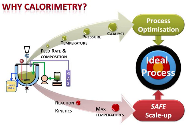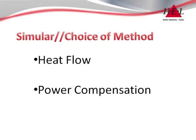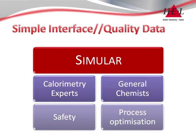The Simula delivers safe scale-up and process optimization in a single easy-to-use platform. It is offered as standard with two experimental methods: traditional heat flow and HL's proprietary power compensation. All methods are presented through a simplified interface but without compromise on data quality, enabling use by calorimetry experts with a focus on safety and R&D chemists whose focus is process optimization.